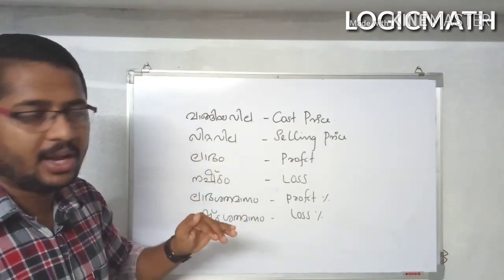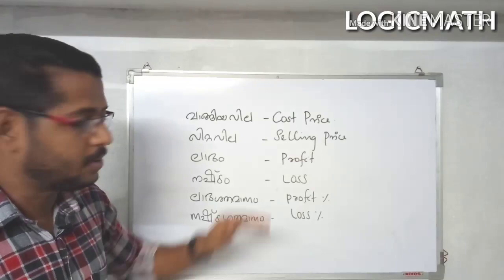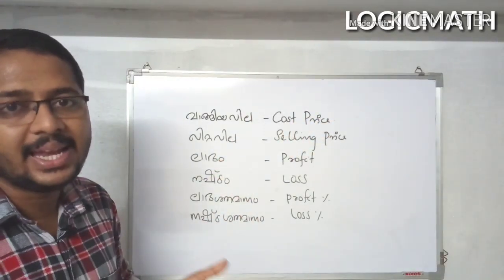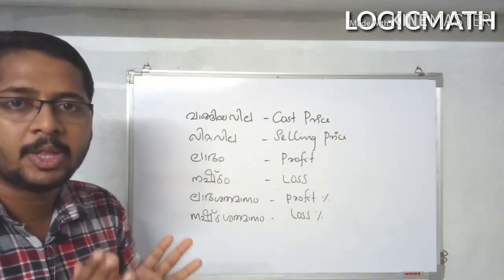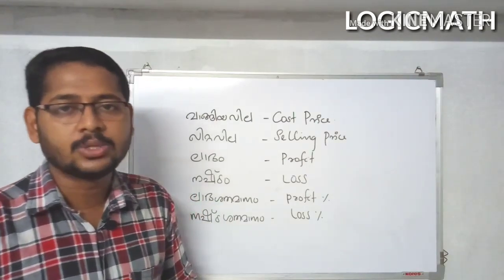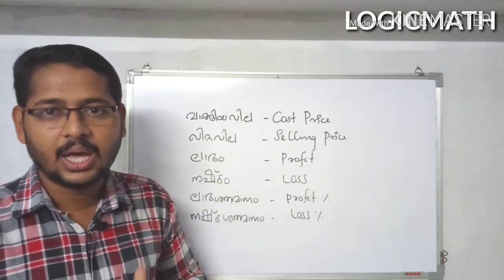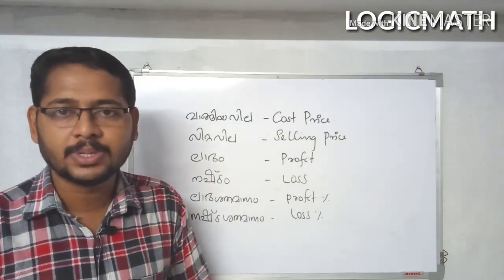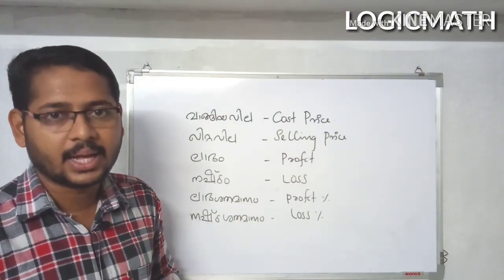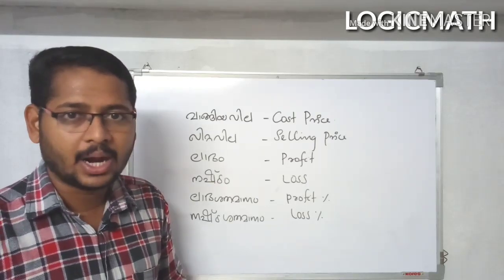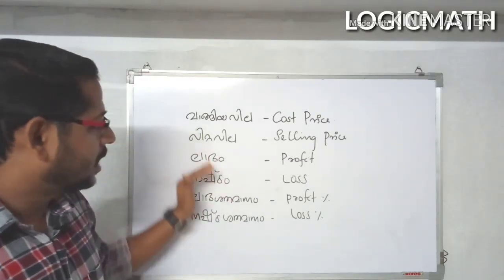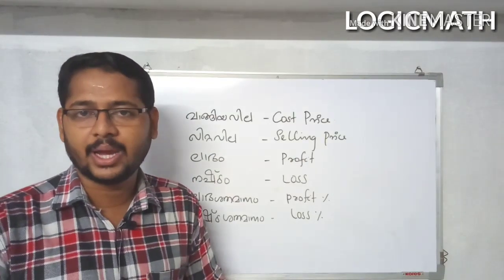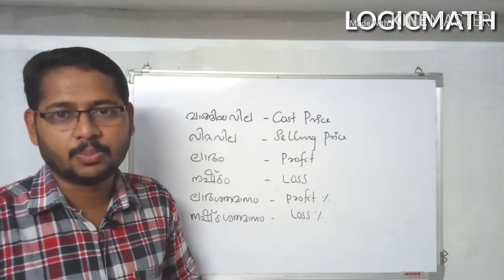Now, vangiyavilla means cost price, abbreviated as CP. Vittavilla is the selling price. Labham is the profit. Nastham is the loss. Labhasadhamanam is the profit percentage, nastasadhamanam is the loss percentage. We will also use discount. In the next video, we are going to use price, lab, nastras, and prokitan.